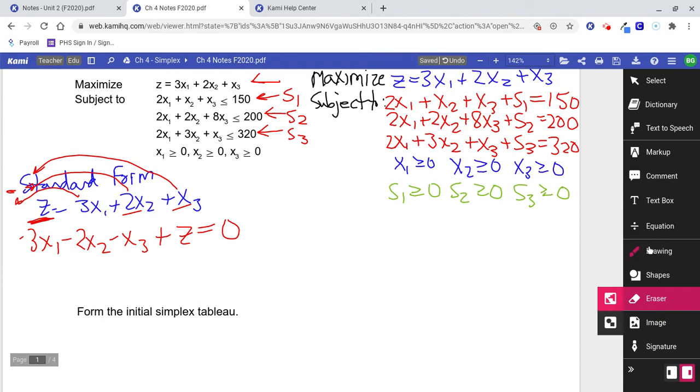Think about our variables in this problem. We've got x1, x2, x3, s1, s2, s3, and z. We've got seven variables in this problem. So, write them down. Just like that. Write them down in an order.